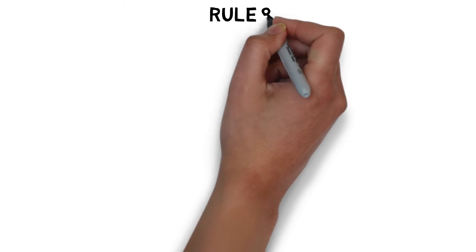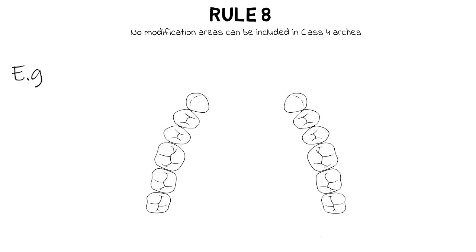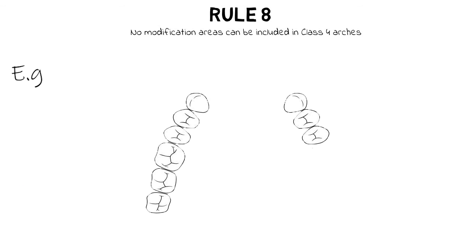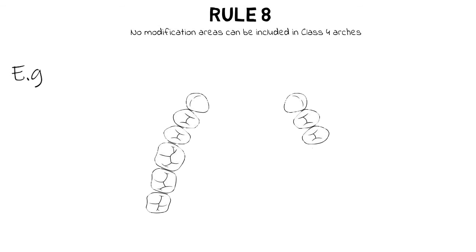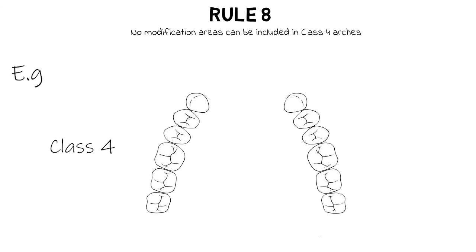Rule 8 states that no modification area can be included in Class 4. If a second molar is removed from a Class 4 case, rule 5 takes over and the most posterior edentulous area determines the classification, making it Class 3 modification 1. Removing first and second molars makes it Class 2 modification 1, and removing molars on the opposite side makes it Class 1 modification 1. Essentially, all classes can have modifications except Class 4, which can never have a modification.